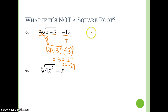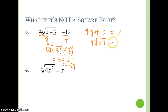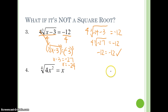Remember, we have to plug it back in and check for extraneous solutions. So we have 4 times the cube root of negative 24 minus 3, and it should equal negative 12. So we have 4 times the cube root of negative 27. The cube root of negative 27 is negative 3. Negative 3 times 4 is negative 12. And it works.